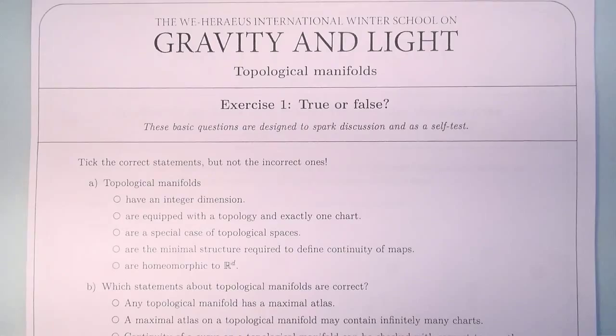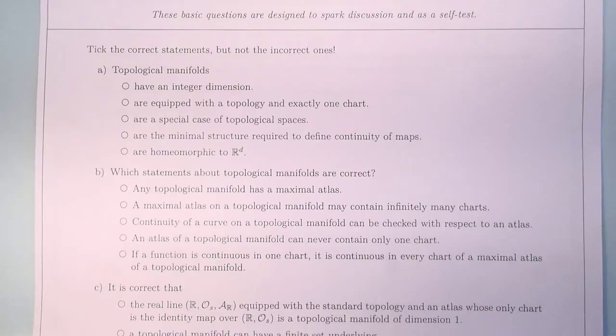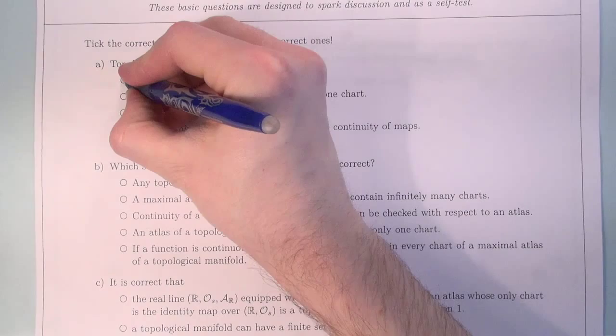We shall take the correct ones but not the incorrect ones. So, part A: Topological manifolds of course have integer dimension. This is correct.